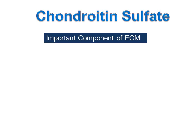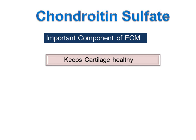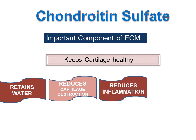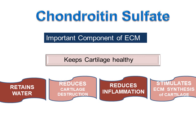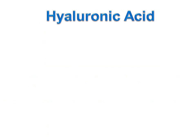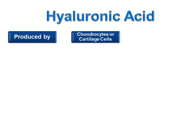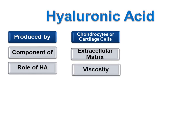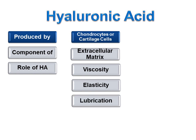Chondroitin sulfate is an important component of ECM. It keeps cartilage healthy by helping cartilage retain water, reduces cartilage destruction, reduces inflammation, and stimulates ECM synthesis of the cartilage. Chondroitin sulfate is a glycosaminoglycan (GAG). Another GAG is hyaluronic acid. Hyaluronic acid is produced by chondrocytes or cartilage cells and is one of the chief components of extracellular matrix. Hyaluronic acid absorbs water, producing a viscous, jelly-like consistency. This viscous fluid keeps the joints lubricated, reducing friction and helping in smooth movement. Hyaluronic acid may help maintain the normal cartilage matrix and therefore probably protects the cartilage.